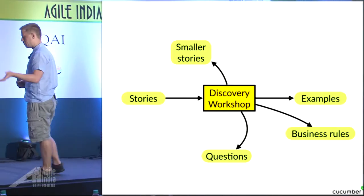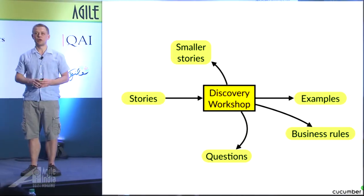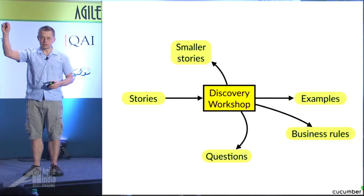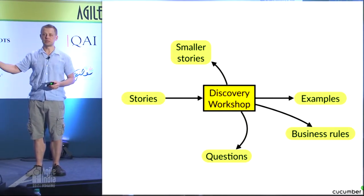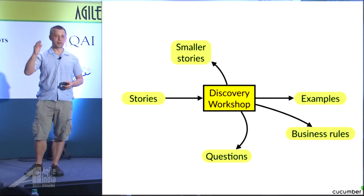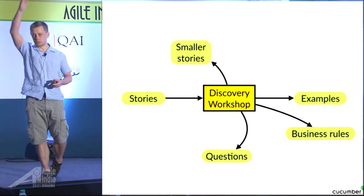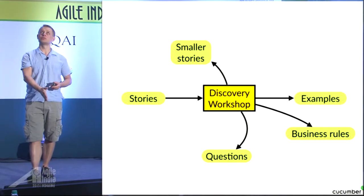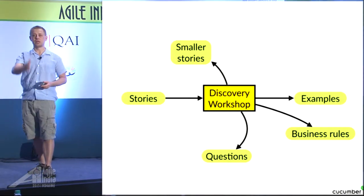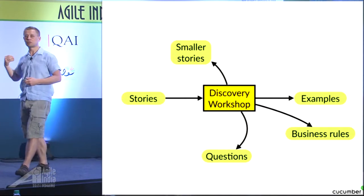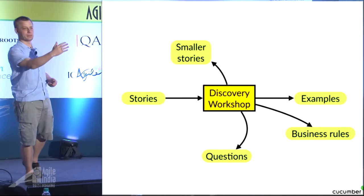So stop breaking your stuff up by tasks — user interface, domain layer, persistence. Break them up by examples, which are more like vertical slices, which is just like: this is one path through this story, this is another one.